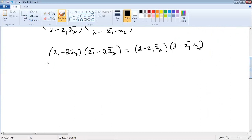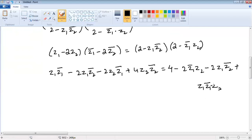Now multiply: Z1 Z1 bar minus 2 Z1 Z2 bar minus 2 Z2 Z1 bar plus 4 Z2 Z2 bar equals 4 minus 2 Z1 bar Z2 minus 2 Z1 Z2 bar plus Z1 Z1 bar Z2 Z2 bar.